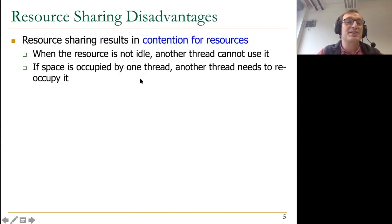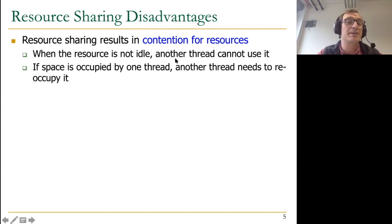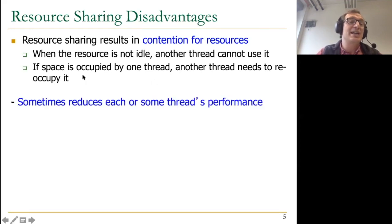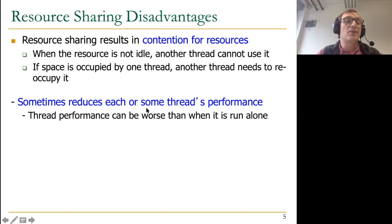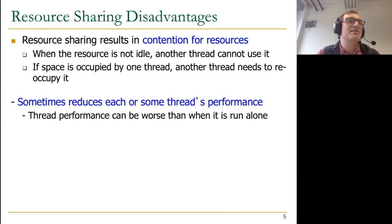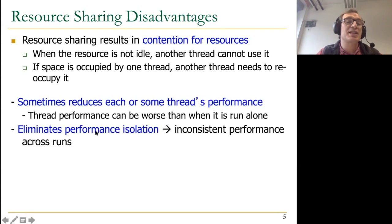Resource sharing has disadvantages as well. It results in contention for resources. When a resource is not idle, another thread cannot use it. If bandwidth is the resource, like in memory, or if the space is occupied by one thread, another thread needs to reoccupy it. This contention sometimes reduces each thread's performance, and thread performance can be worse than when run alone. For example, if two threads access the same bank requiring different rows, they thrash each other's row buffer. This eliminates performance isolation — you get inconsistent performance across different runs depending on which thread you're running with.